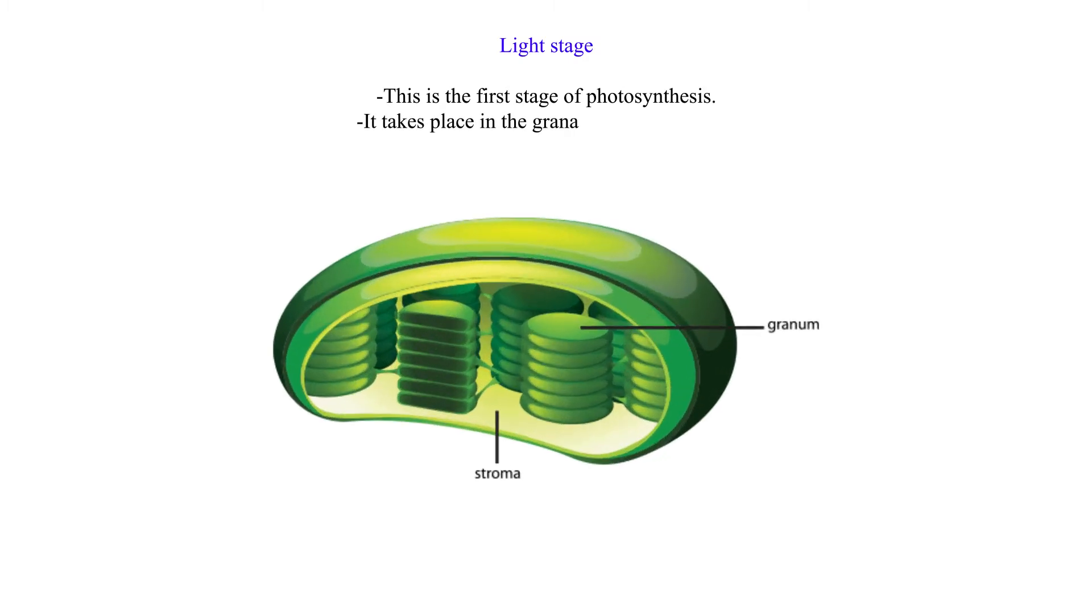Light stage: This is the first stage of photosynthesis. It takes place in the grana of the chloroplast.